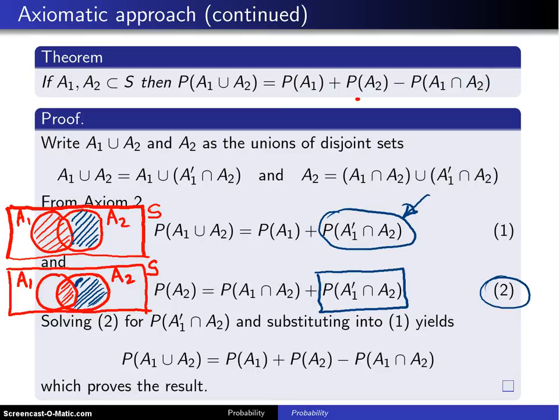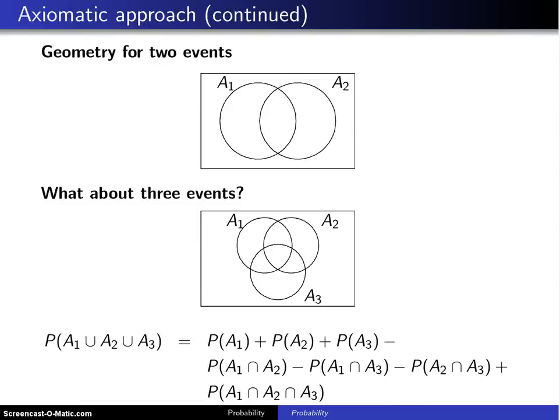Now, on the next slide, what you will see, here is the geometry for two events. And I will run through this rather quickly. What you have is, if you want the probability of A1 union A2, here is the probability of A1. And when you add to that the probability of A2, you can see you have double-counted this wedge here in the middle.